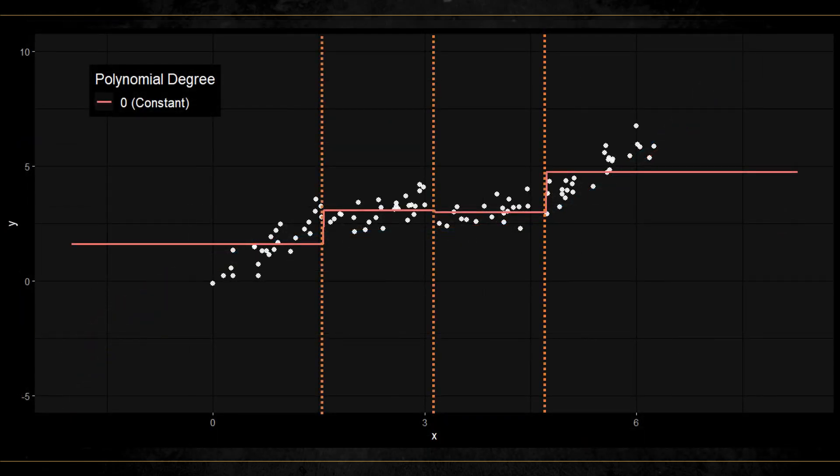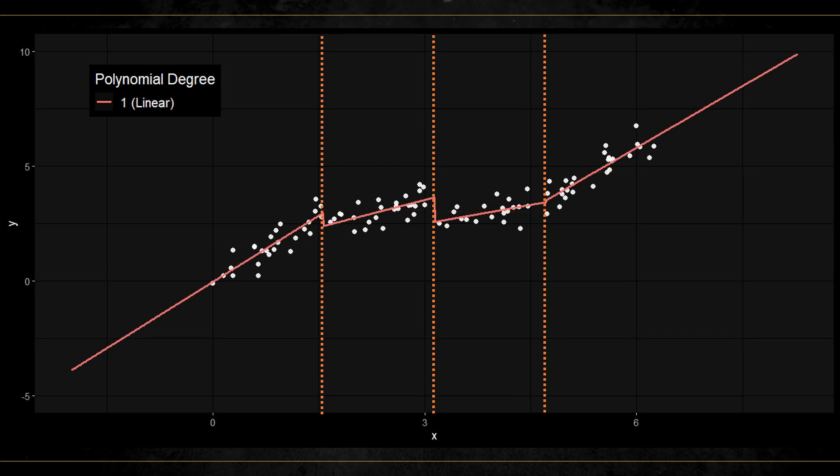Here you can see piecewise polynomials fitted to the data. What this means is that in each segment a different regression is fit. Here with only constant terms, here with linear terms, here with quadratic, and here with cubic.